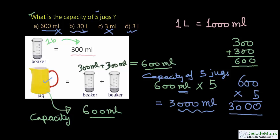We are left with 2 options: option B is 30 liters and option D is 3 liters. We found the answer as 3000 milliliters, so we need to convert milliliters to liters.